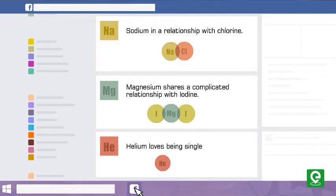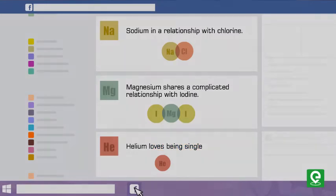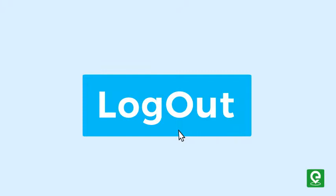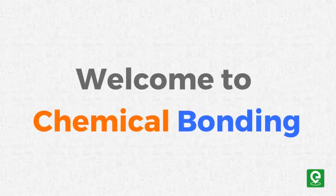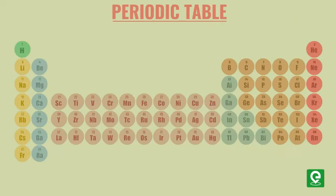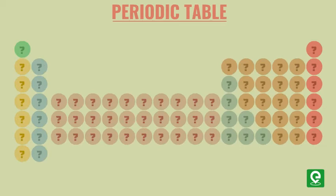I got tired of all these relationship statuses and logged out from Facebook. Welcome to chemical bonding. We have more than hundred elements in our periodic table. Do you know how many of these elements are found in nature in their free elemental state?